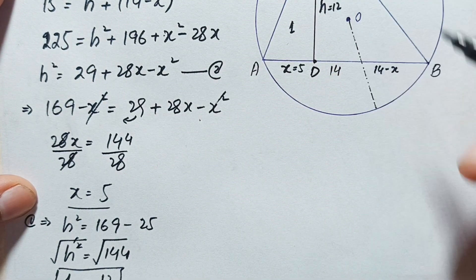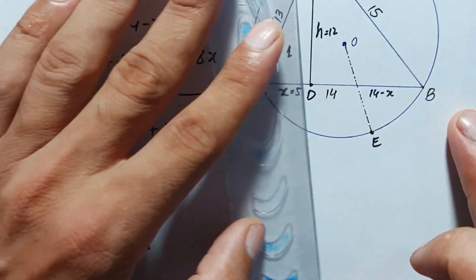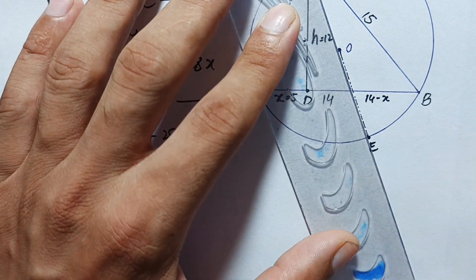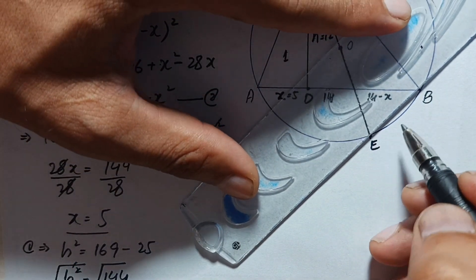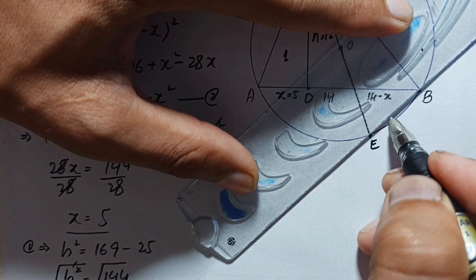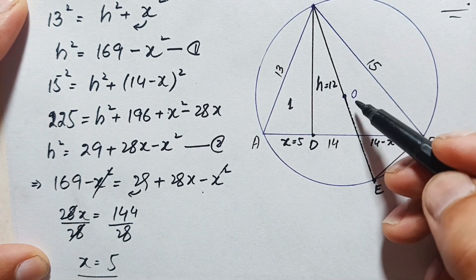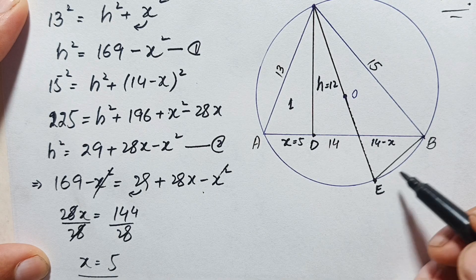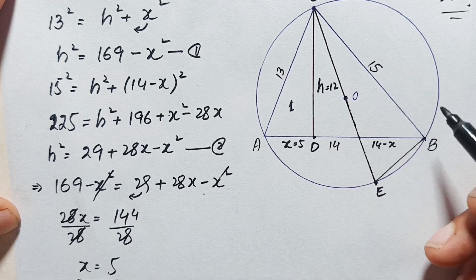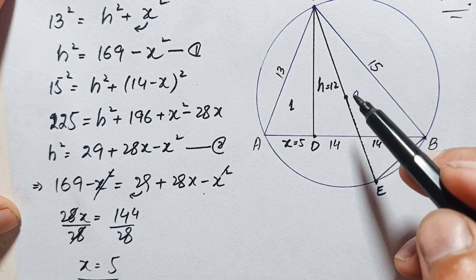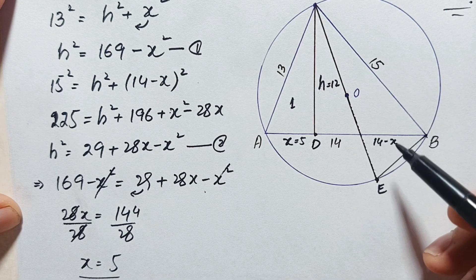Next, we connect point C with a point E on the circle such that line CE passes through the center O, making CE a diameter. We also connect point E with point B. By Thales' theorem, if two points form a diameter and a third point lies on the circle, those three points form a right angle triangle — so the angle at point B is 90 degrees.